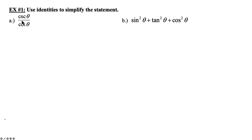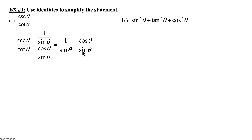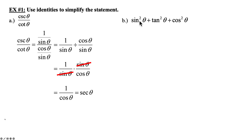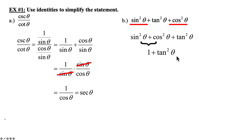Using our identities to simplify: the best approach is to convert into sines and cosines. Cosecant theta is 1 over sine theta; cotangent theta is cosine theta over sine theta. We don't divide by fractions — we multiply by the reciprocal of the second fraction. So we change it to 1 over sine theta times sine theta over cosine theta. The sine thetas cancel, and 1 over cosine becomes secant theta. For sine squared theta plus cotangent squared theta plus cosine squared theta: group sine squared and cosine squared together — that's 1. Then 1 plus tangent squared theta, from our Pythagorean list, equals secant squared theta.